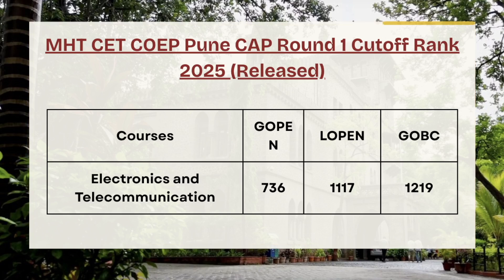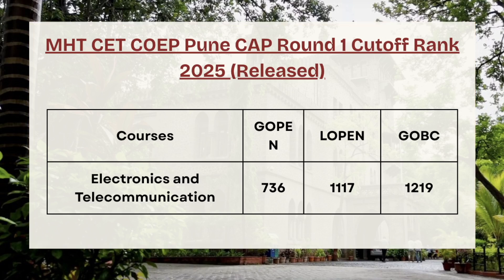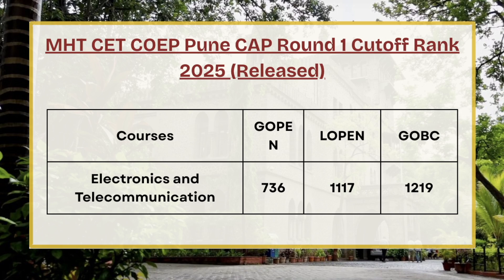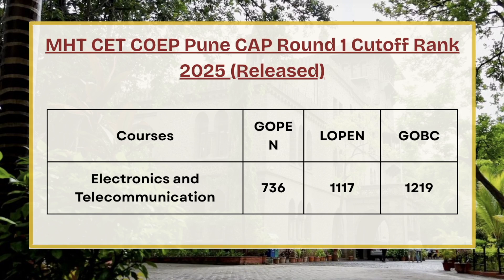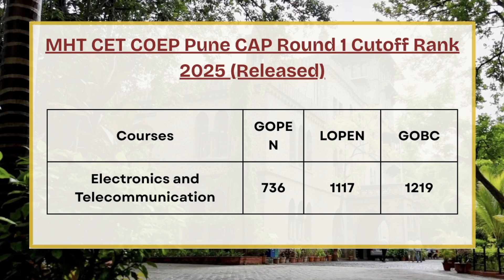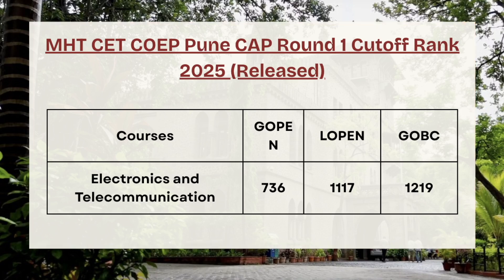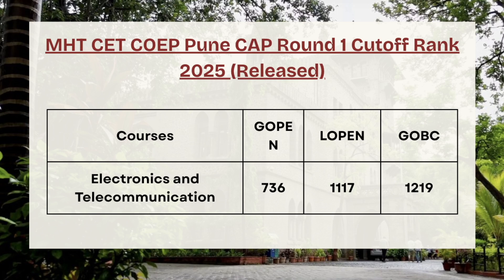Moving ahead, we have Electronics and Telecommunication Engineering. For G-Open, the official cutoff rank for CAP Round 1 is 736, for L-Open the cutoff rank is 1117, and for GOVC the cutoff rank is 1219.